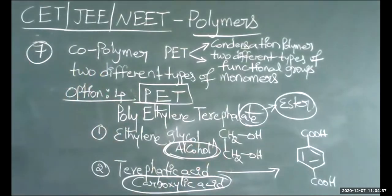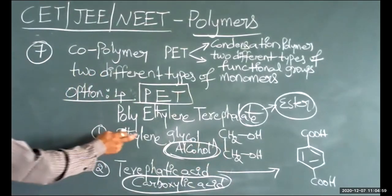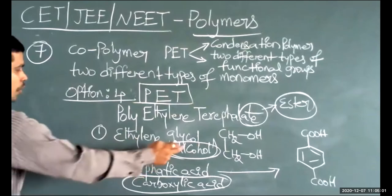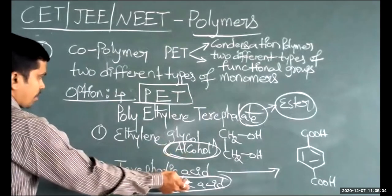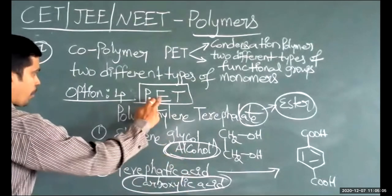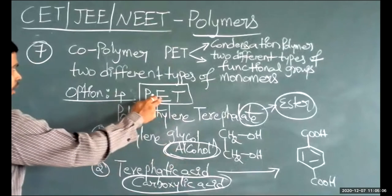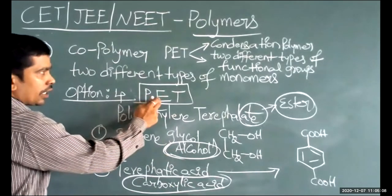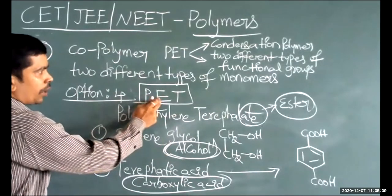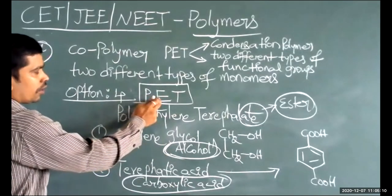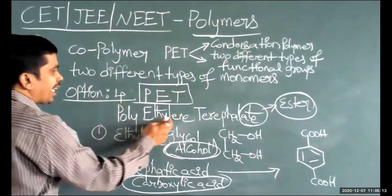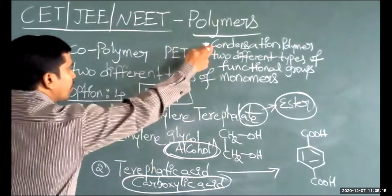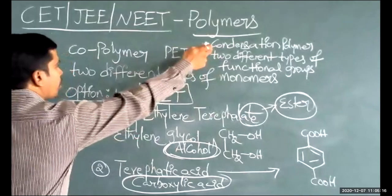Whenever monomers contain two different types of functional groups — like alcohol and carboxylic acid — the polymer is formed by condensation polymerization.